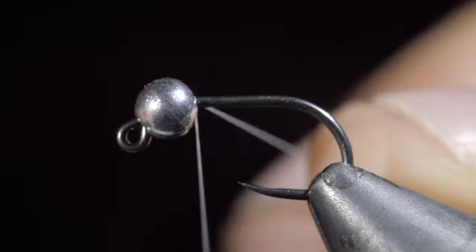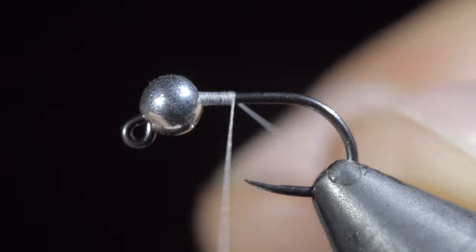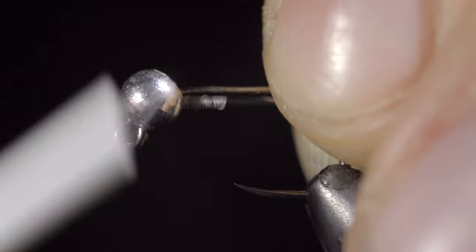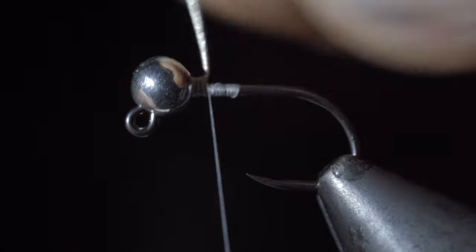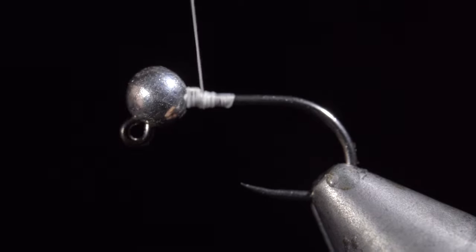Secure your thread to the hook shank, snapping the excess free. We'll wrap back up to our tungsten bead, insert a lead-free wire, and secure it tightly. Once complete, we'll helicopter free and build up a small thread dam to keep our lead-free wire in place.